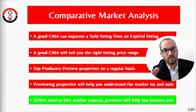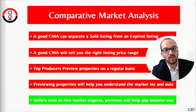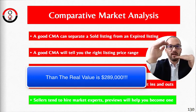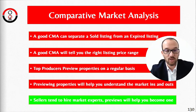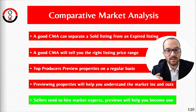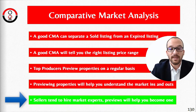The sold listings give us reality — that's what you really want to focus on. If three listings are listed between $300,000 and $325,000 but the solds are between $250,000 and $289,000, the seller needs to understand there is a listing price and a sold price. As you go along with your listing presentation, you need to get into this conversation. Sellers tend to hire market experts.